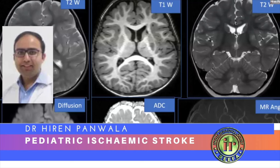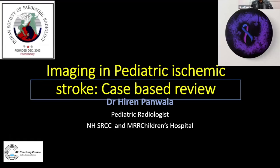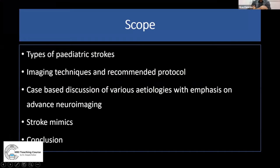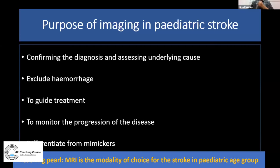Today we are going to discuss imaging in pediatric stroke with case-based examples. The scope of the session covers types of pediatric strokes, imaging techniques and recommended protocols, case-based discussion of various etiologies with emphasis on advanced neuroimaging, and stroke mimics.